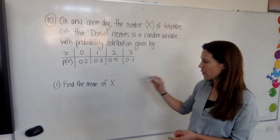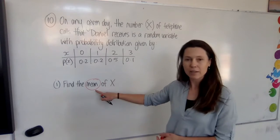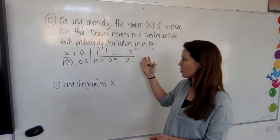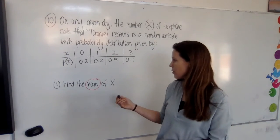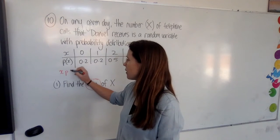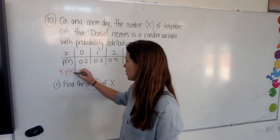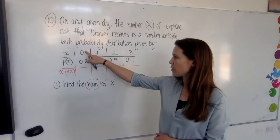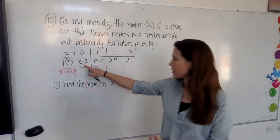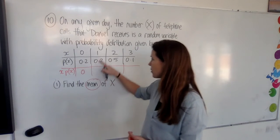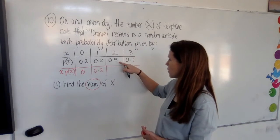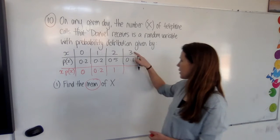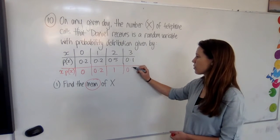What we need to do whenever we're seeing this word mean with regard to a probability distribution is we need to find the expected value. So to do that, we need to add an extra row here, and we need to multiply each score by its probability. Zero times anything is zero. One lot of 0.2 is 0.2. Two lots of 0.5 is 1.